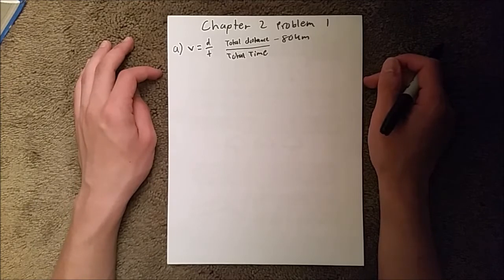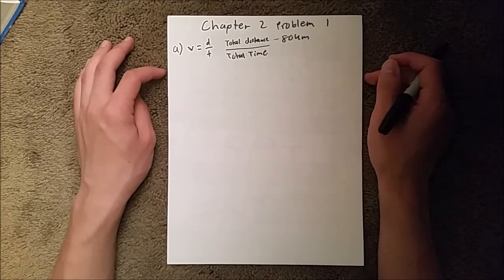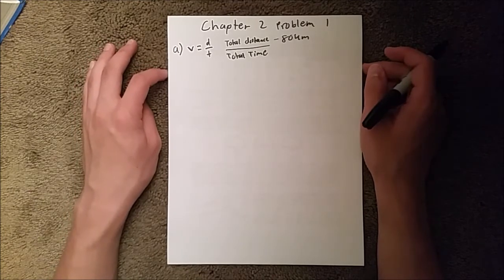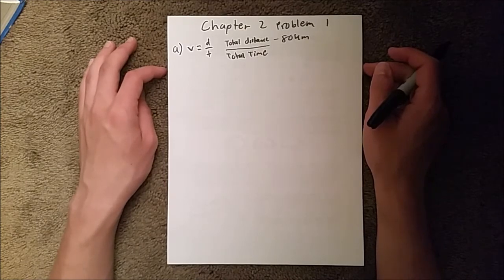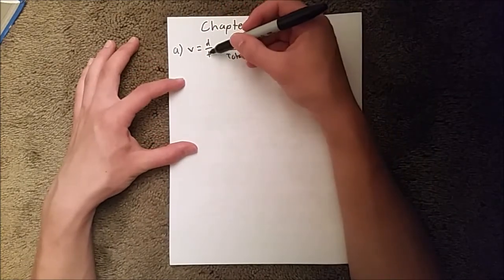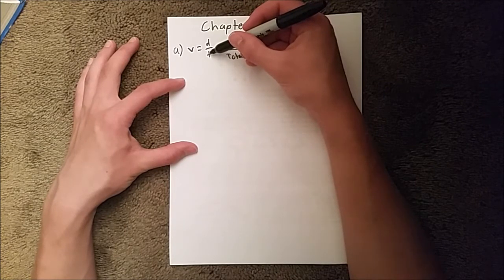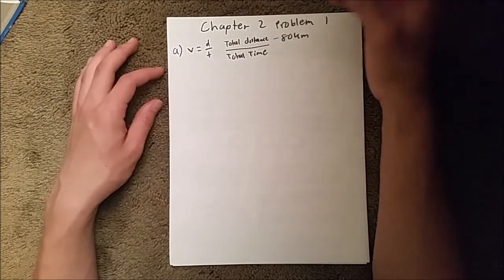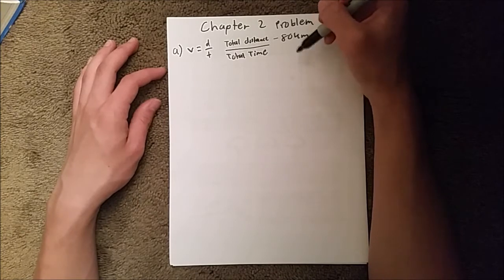So, what we need to do is we need to break it up into two separate pieces. And we need to rearrange this equation up here, so that we solve for the time. Because we already have the distance, and we just need the time.